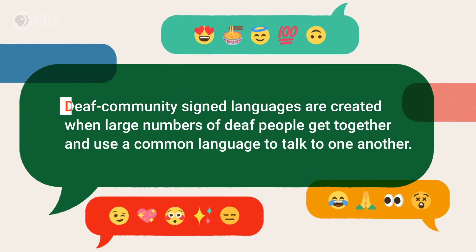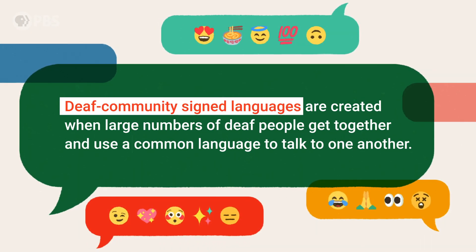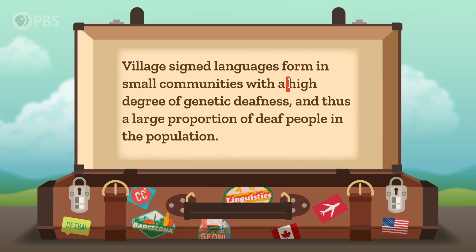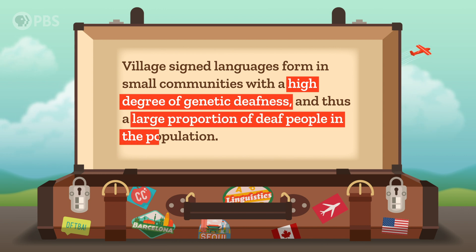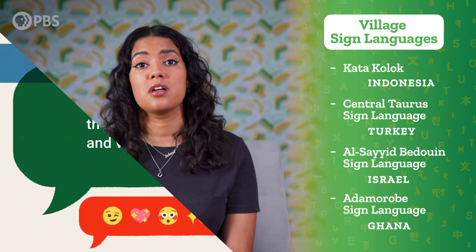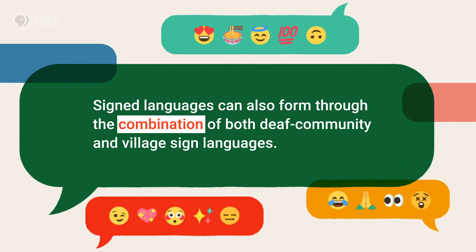Another way that languages get added to the official language counts is when they've existed for a long time but have started being taken more seriously by researchers. This is the case for many hundreds of sign languages. There are two common circumstances where signed languages become stable across generations. The first is deaf community signed languages, created when large numbers of deaf people get together and use a common language — as happened with Nicaraguan Sign Language, and also French Sign Language in Paris. The second way is in small communities with a high degree of genetic deafness, creating village sign languages, such as Katakolok in Indonesia, Central Taurus Sign Language in Turkey, Al Sayyid Bedouin Sign Language in Israel, and Atamarobi Sign Language in Ghana. Signed languages can also form through a combination of both types.